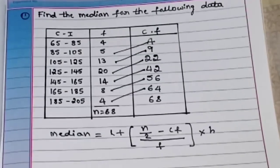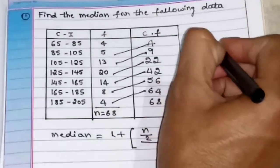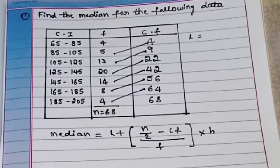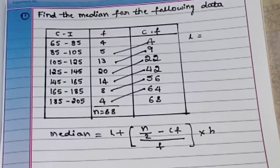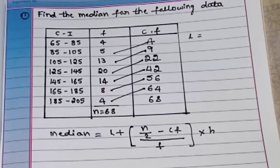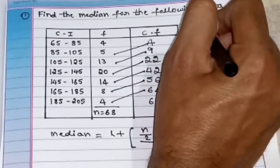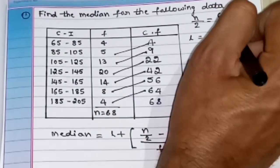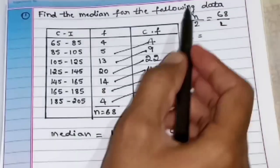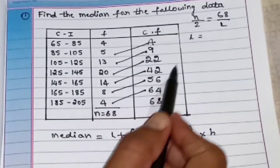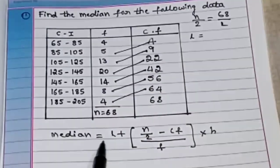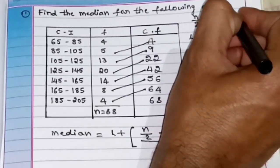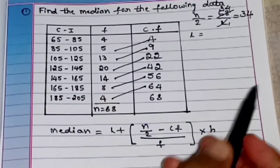Now I will write the data. First we need L — L means the lower limit of the median class. To choose the median class, we need to divide n by 2. n is 68 divided by 2, which equals 34. So n by 2 equals 34. Now we check in which cumulative frequency interval 34 falls. The value 34 falls between 22 and 42.